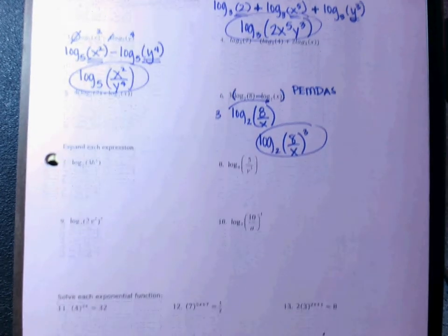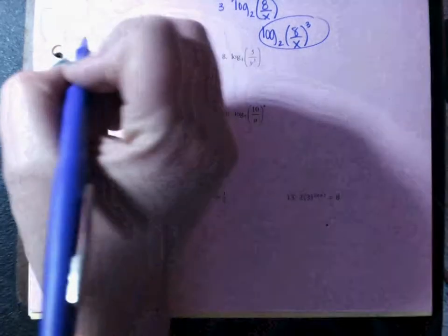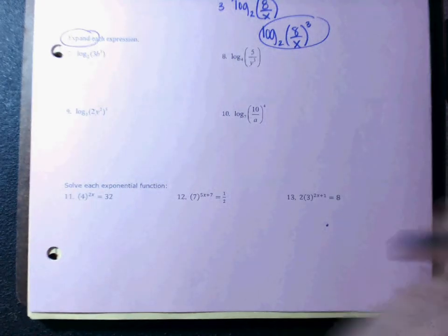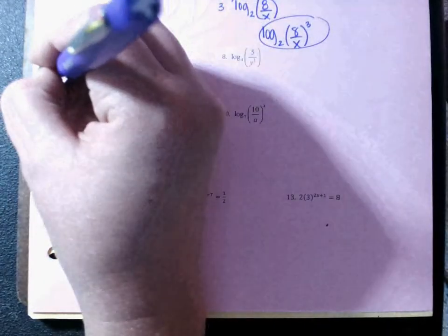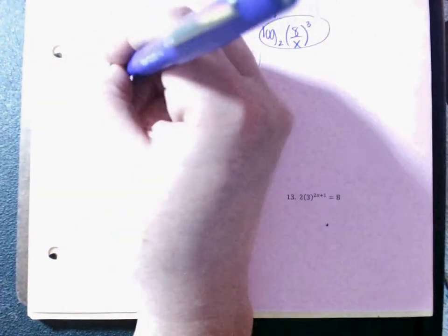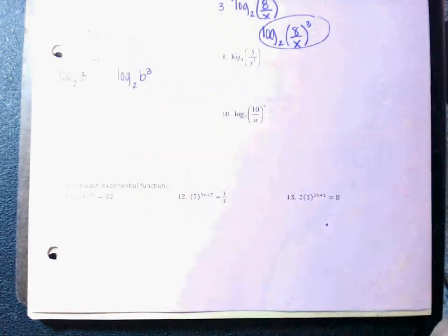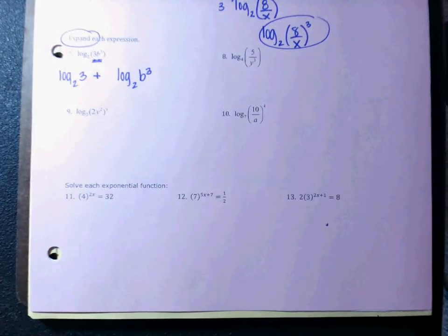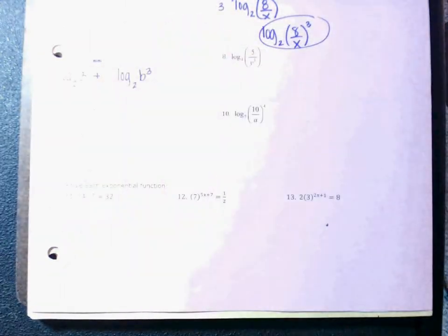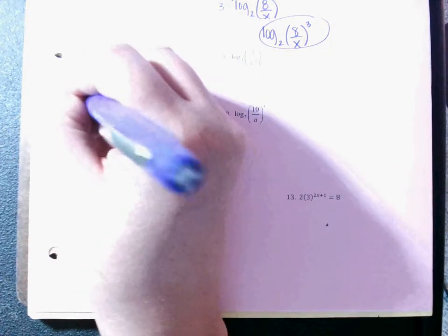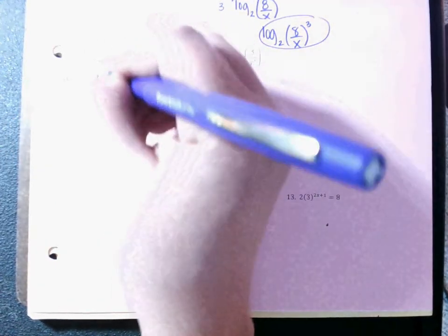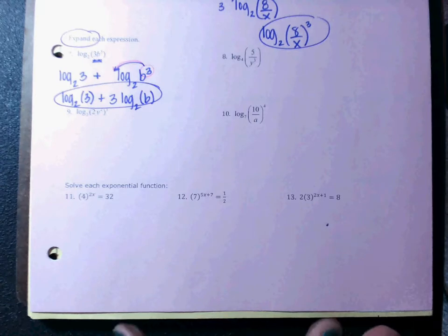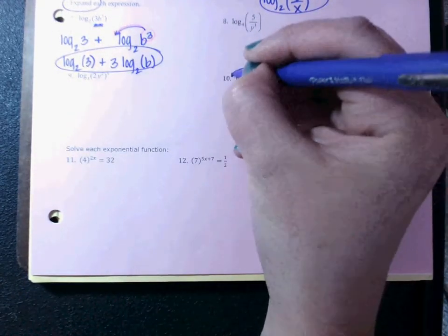Come down to numbers seven through ten — you're expanding each expression, which means that your logs do not want to share with each other. For example on number seven, log base 2 of (3b³): they do not want to share a log anymore, so I would break it up into log base 2 of 3 and log base 2 of b³. Because these were originally multiplied, when I separate them I'll use addition. Then the three from the exponent moves down to the front: log base 2 of 3 plus 3·log base 2 of b.